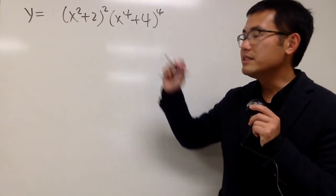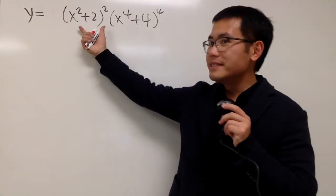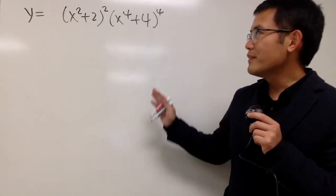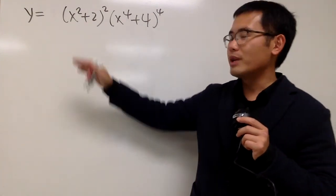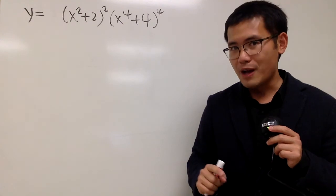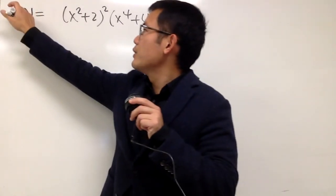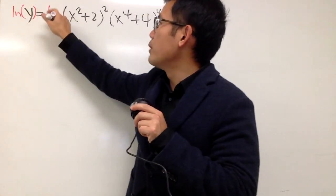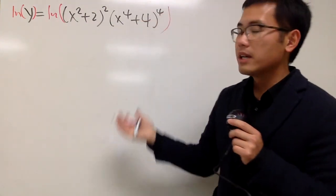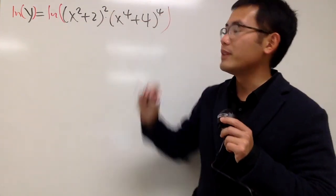We are going to find the derivative of this — notice that we have this crazy thing times another crazy thing. Well, instead of doing the product rule and also the chain rule and all that, let's do the following. First of all, let's go ahead and take the natural log on both sides, because natural log can actually help us break this apart very nicely.